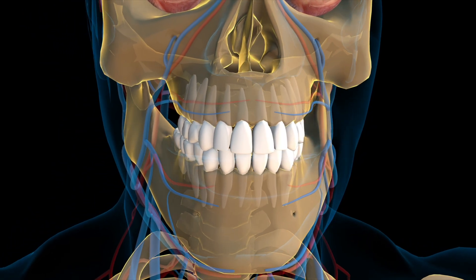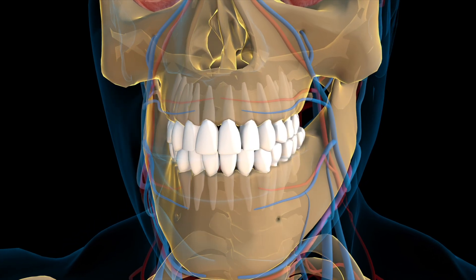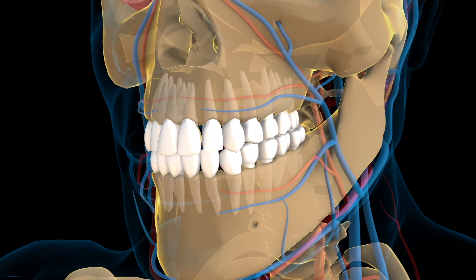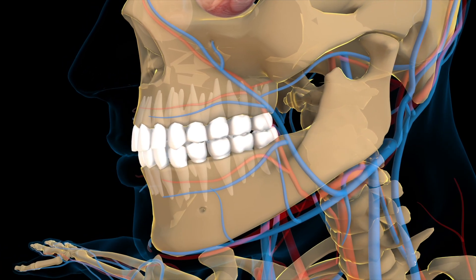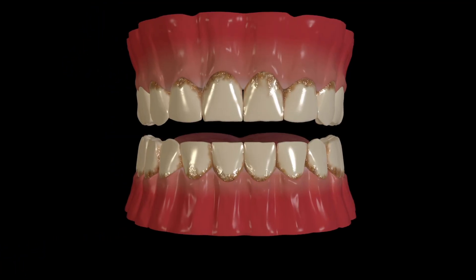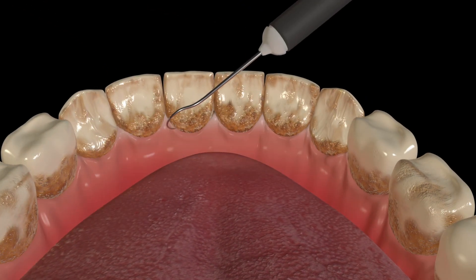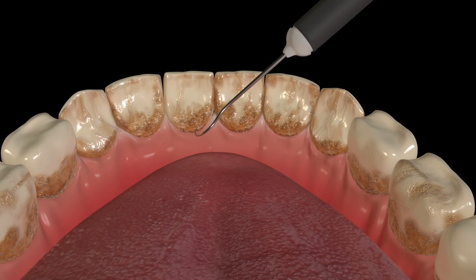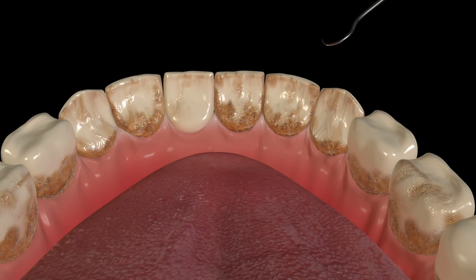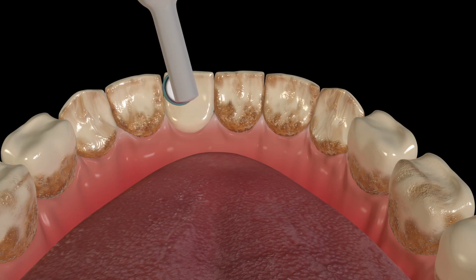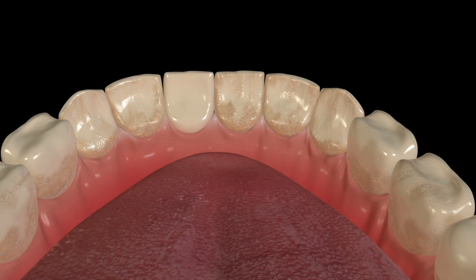Regular dental checkups are essential for early detection and management of caries. Dentists can spot early signs of decay that you might not notice and provide professional cleanings to remove tartar buildup. Dental sealants are another preventative measure, especially for children and teenagers — sealants are thin coatings applied to the chewing surfaces of back teeth to protect them from decay. If you experience tooth pain, sensitivity, or notice any changes in your teeth, do not delay seeking professional help. Early intervention can save your tooth and prevent complications.